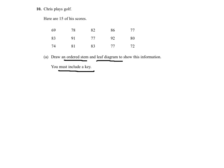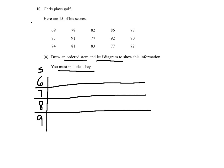The minimum value is 69 so I will start with 6 and the maximum value is 92 so 6, 7, 8, 9. This is my stem and the leaves will be on this side.